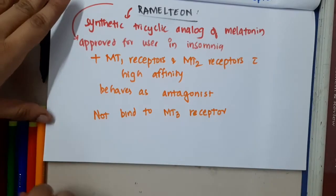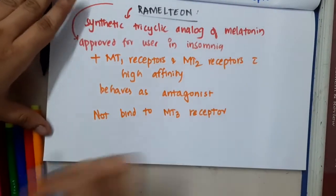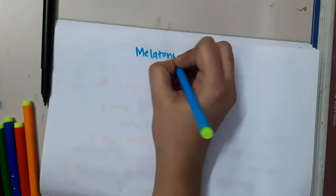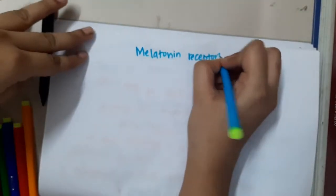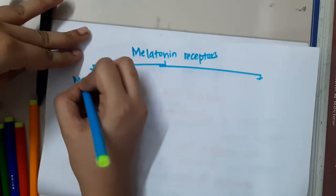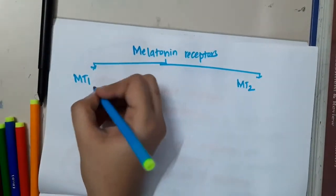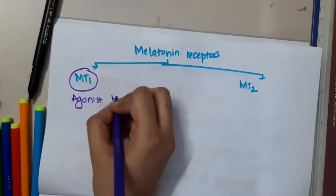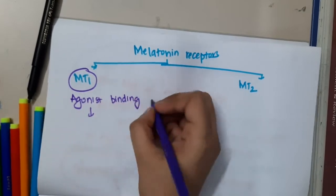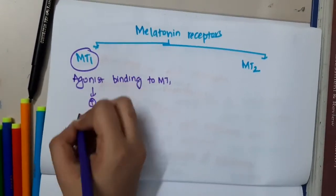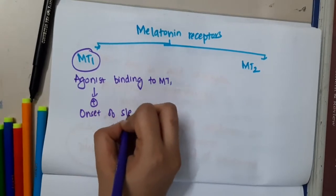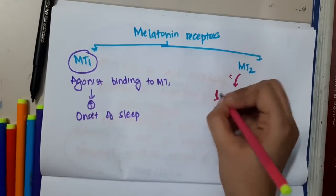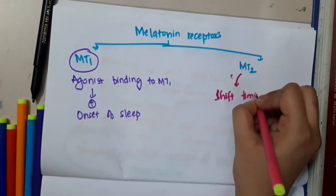Melatonin receptors are of two types: MT1 receptors and MT2 receptors. MT1 receptors — when an agonist binds to them, it promotes the onset of sleep. Whereas MT2 receptors — when an agonist binds to them, it shifts the timing of the circadian rhythm.